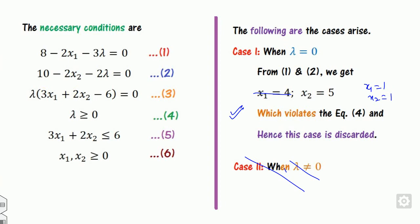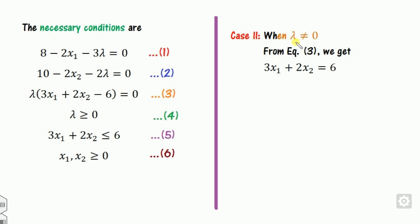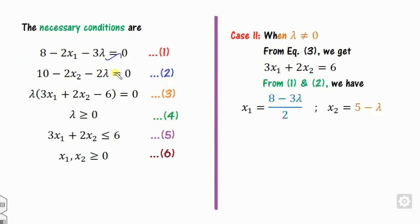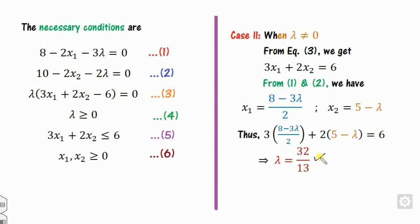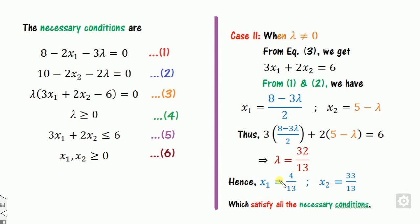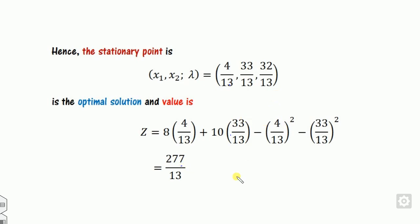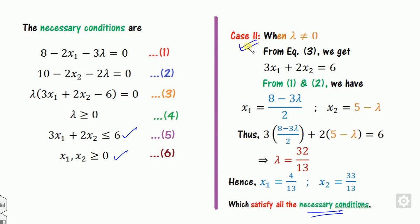Case 2: λ ≠ 0. From the binding constraint equation, and using equations 1 and 2 to find x1 and x2, substituting into the constraint gives the value of λ, which is positive and satisfies λ > 0. Substituting back gives x1 and x2, which satisfy all necessary conditions. This is the optimal solution. A practical note: you can start with either case; if you find a valid optimal solution in one case, there is no need to check the other.